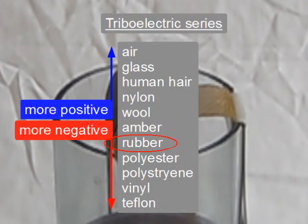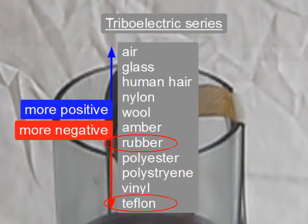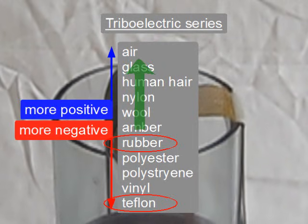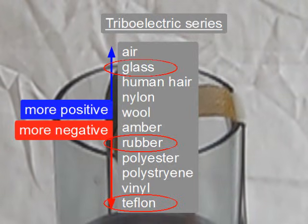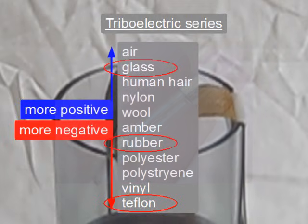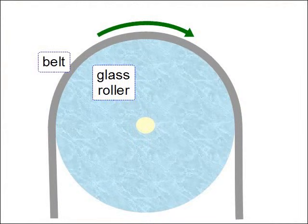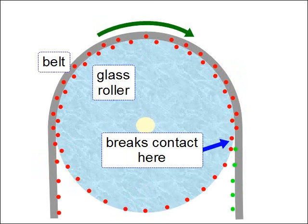This belt is rubber, which is in the middle of the table. The bottom roller is Teflon, which is at the negative end of the table, meaning it gets charged negatively. So we want something that's at the positive end of the table, as far away from rubber as we can afford, so that it will be charged a lot. As an example, many small Van de Graaff generators use glass from a fuse or a small bulb. Due to the triboelectric effect, when a glass roller breaks contact with the belt, the belt will take electrons from the roller, making the roller positively charged.